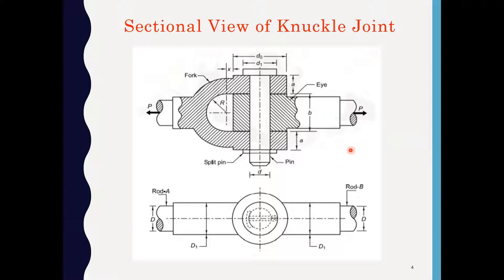In designing the knuckle joint, we have to find various dimensions. D is the rod diameter. D1 is the enlarged diameter of the rod. A is the thickness of the fork end and B is the thickness of the eye end. DP is the knuckle pin diameter and D1 is the outer diameter of the collar of the knuckle pin. D0 is the outer diameter of the single eye as well as fork eye.